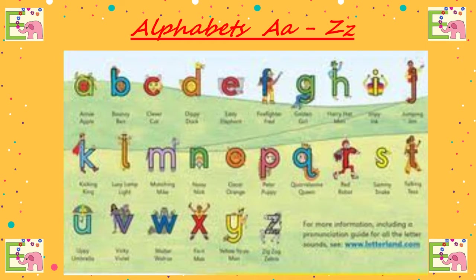Good job children! So just now we did the oral recitation of letters A to Z. Till now, we have learned letters A, B, C and D. And also, we learned the letters and characters of all these letters.